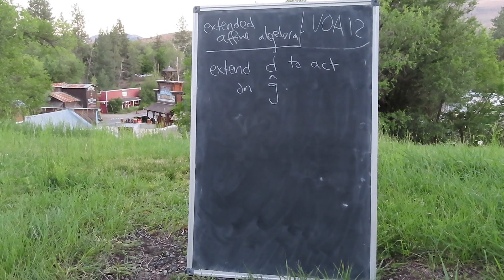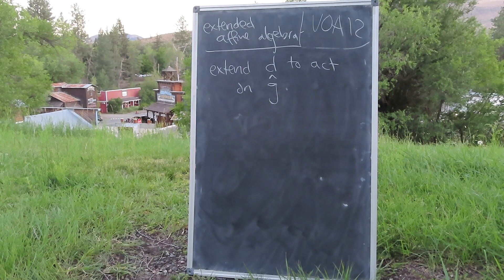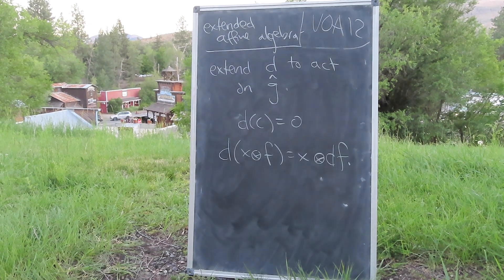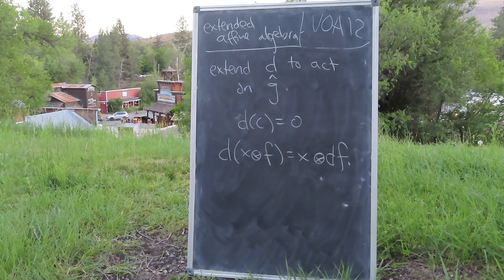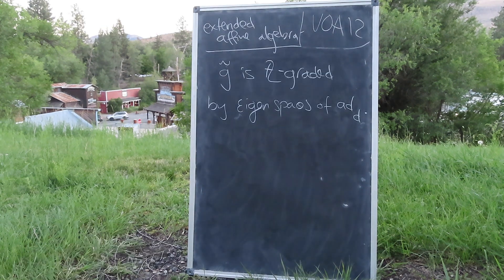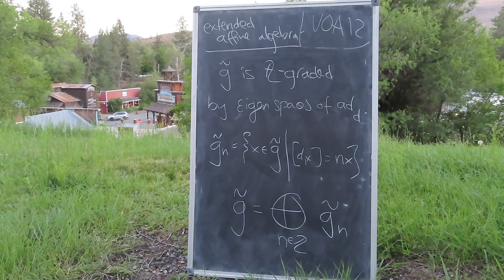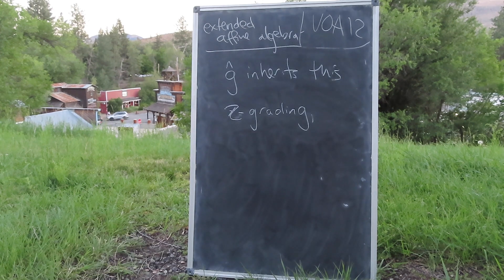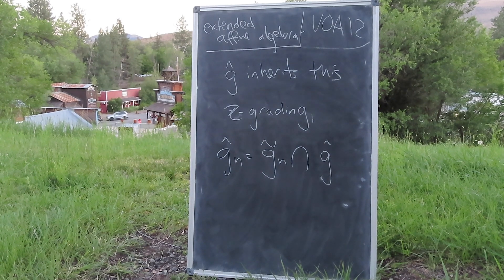We now turn our attention to an extension of the affine Lie algebra G-hat. Let's consider an extension of the derivation D on the Laurent polynomials to G-hat by the following rules: D on C vanishes, and D on the product X times F equals X times DF. We can append the derivation D to G-hat to define the extended affine Lie algebra, denoted virgulilla G. This extended algebra is naturally Z-graded by eigenspaces of ad D, and G-hat inherits a Z-grading from virgulilla G by intersecting the subspace of the homogeneous degree with G-hat.